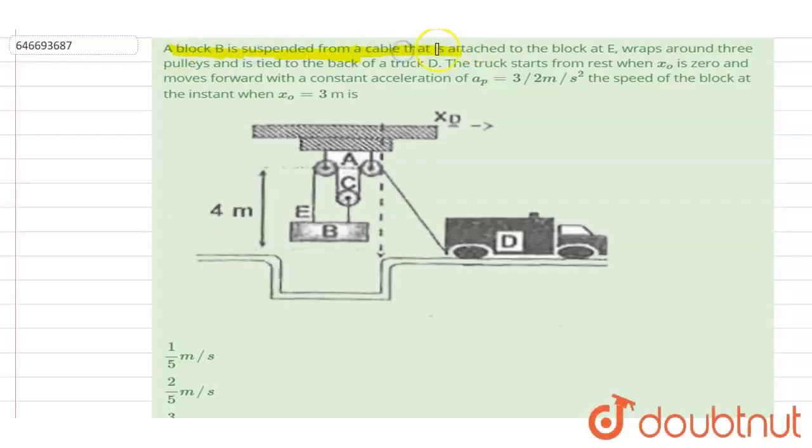A block B is suspended from a cable that is attached to block E, wrapped around three pulleys and is tied to a truck D. The truck starts from rest when x₀ is zero and moves forward with constant acceleration a = 3/2 meter per second square. Find the speed of the block at that instant when x₀ is 3 meter.